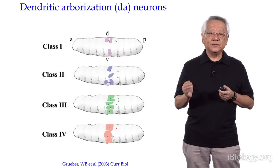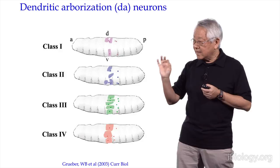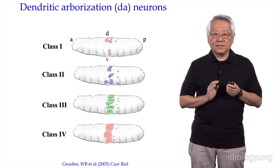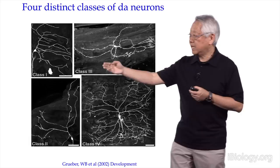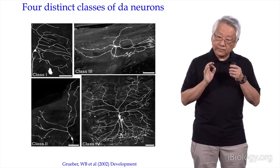The shaded area for each class indicates the territory covered by the dendritic arborization of each neuron. These four classes of neurons have distinct dendritic morphology, from class 1 which has the simplest dendritic morphology, to class 4 which has the most elaborate dendritic arborization. Our task, then, is to explain how each class of those neurons gets its type-specific dendritic arborization.